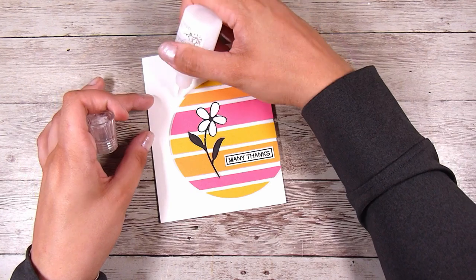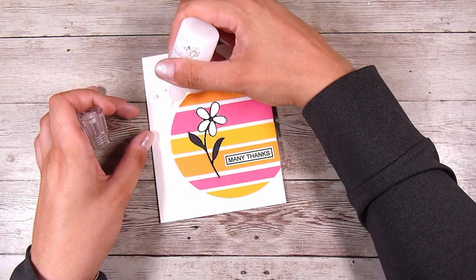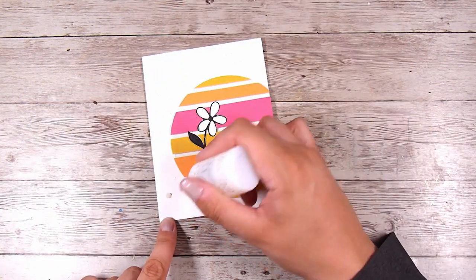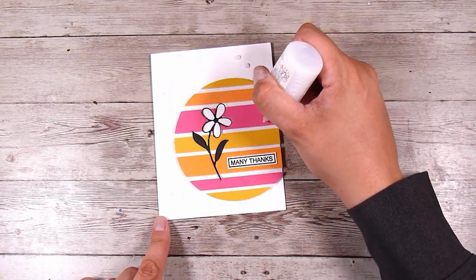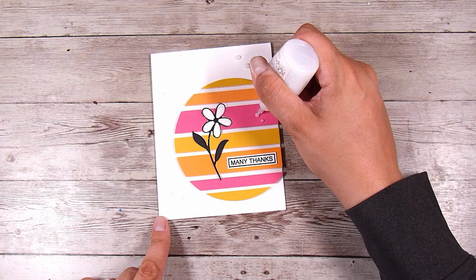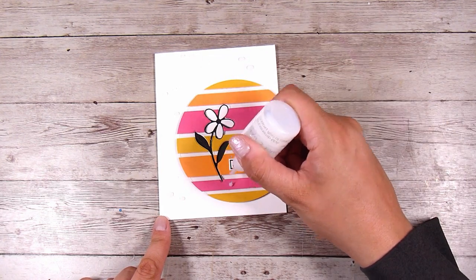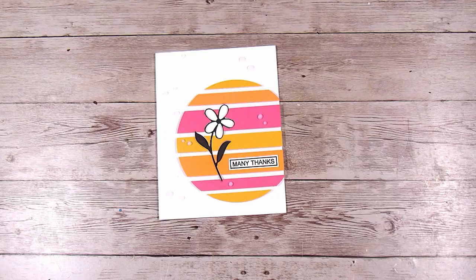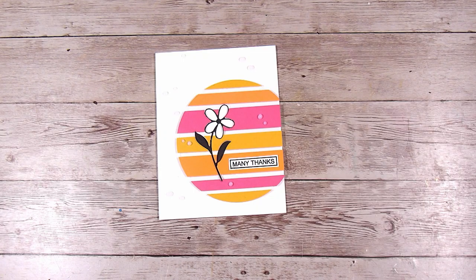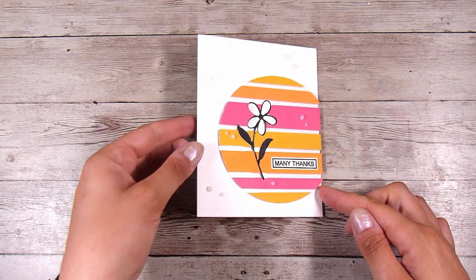Then I'm adding a few Nuvo Drops. This is the Morning Dew color, which dries transparent. It dries absolutely clear, even though it goes on a little bit white, and I'm just popping some dots here and there. I tend to do kind of a little bit bigger one, and then a little bit smaller one beside it. Just a couple. This is a very clean and simple card, but one of my favorites.